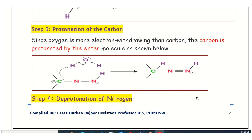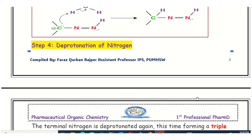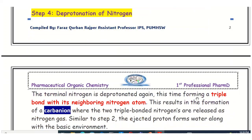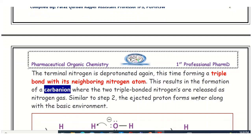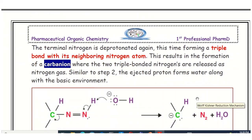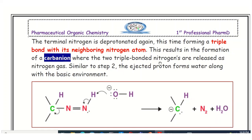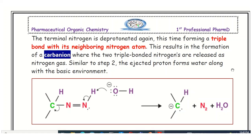Step four is again the deprotonation of the terminal nitrogen. The second deprotonation step takes place, and ultimately a triple bond forms between the two nitrogen atoms. The intermediate is converted into molecular nitrogen gas (N₂), and in the same step, a carbanion is again formed at the carbon.